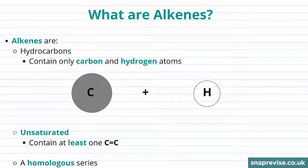So let's begin by having a look at what are alkenes. Well, alkenes are similar to alkanes but there are some marked differences. Just like alkanes, alkenes are hydrocarbons, and what we mean by that is they contain only carbon and hydrogen atoms. However, an important difference between alkanes and alkenes is that alkenes are unsaturated, and by that we mean they contain at least one carbon to carbon double bond.